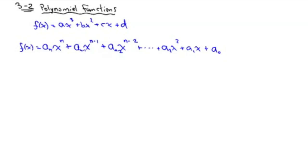We can go to the next one: it would be A sub N minus 2 times X to the N minus 2 power. And we can do this for quite a long time, until we get down to A sub 2 times X squared, A sub 1 times X, plus A sub 0. This is the general polynomial form. It represents any degree polynomial — it could be 100. That's what's called the general polynomial.